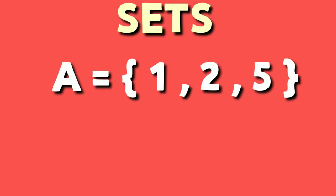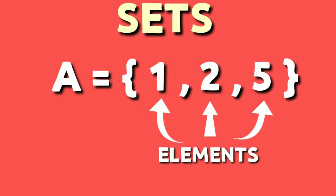Here is an example of a set. A equals 1 to 5. 1 to 5 are elements of a set and these are open and closed curly braces.